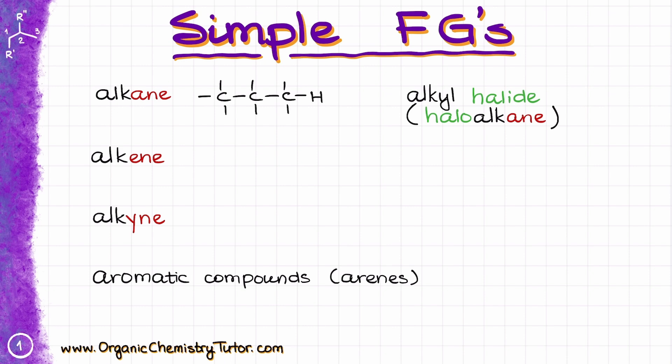No double bonds, no heteroatoms, or anything like that. We will normally show our alkanes as a zigzag when we are drawing the bond line structure, so there is nothing to identify here.